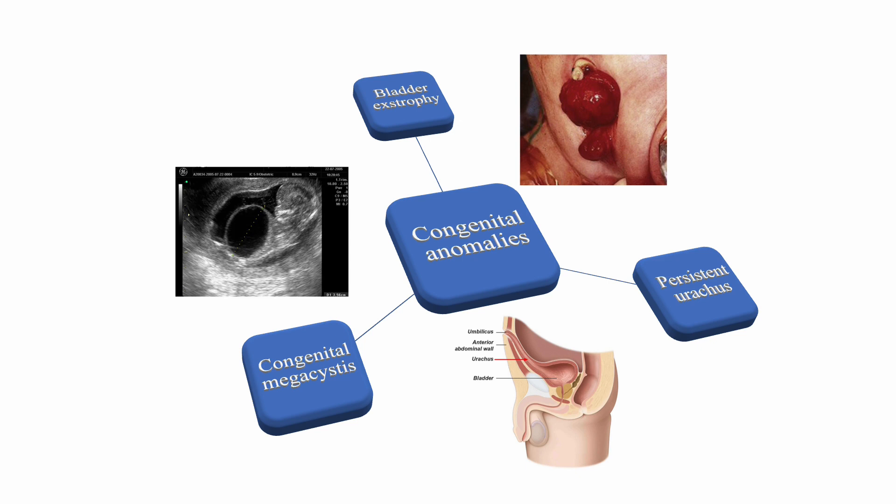The main congenital anomalies of the urinary bladder we will discuss are bladder exstrophy — also called ectopia vesica — and persistent urachus. Rarely, we also find congenital megacystis as a congenital anomaly of the urinary bladder.